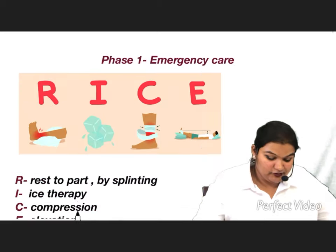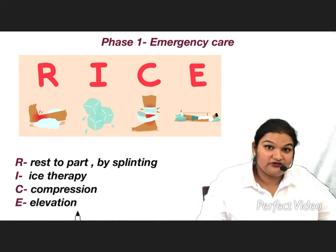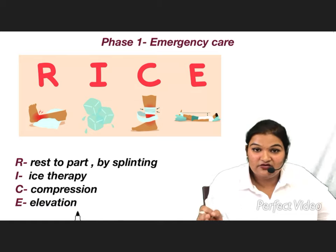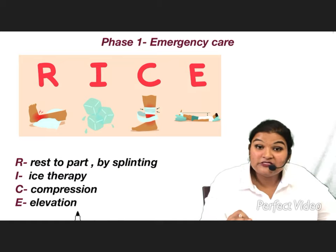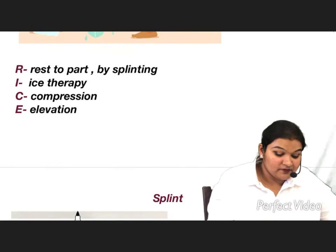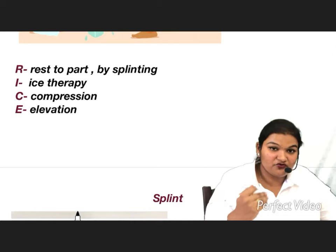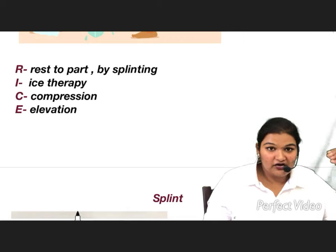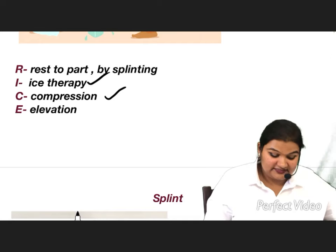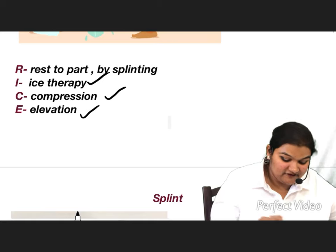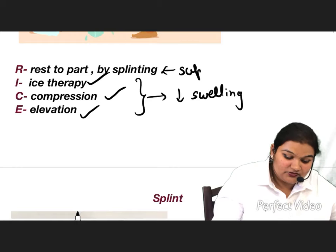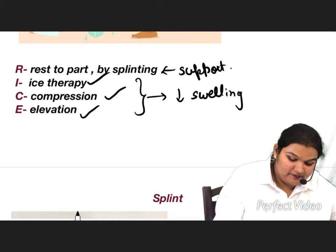Let us first talk about the emergency phase. This phase starts where the fracture occurs — as soon as the fracture occurs, emergency care should be started. The principle is RICE: R for rest by splinting, I for ice therapy, C for compression, and E for elevation. Ice therapy, compression, and elevation are done to reduce swelling; splinting provides support to the affected part.